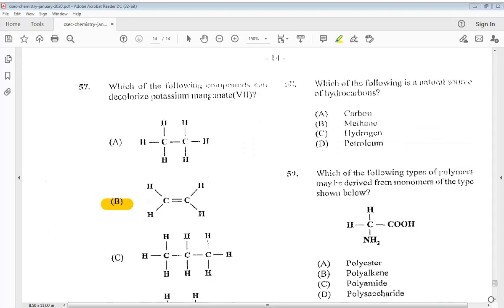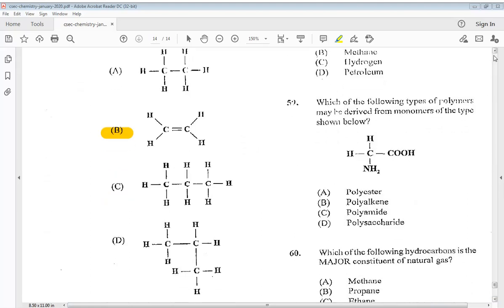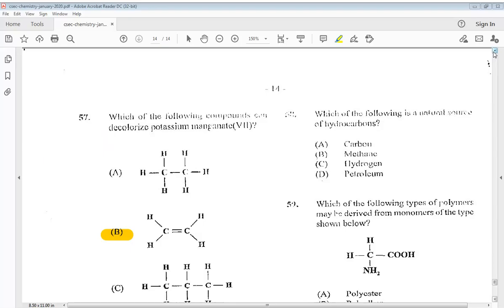Question 58. Which of the following is a natural source of hydrocarbons? A carbon, B methane, C hydrogen, or D petroleum. So the answer is D petroleum.